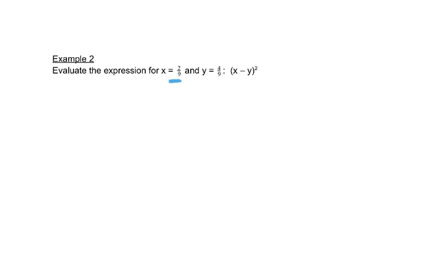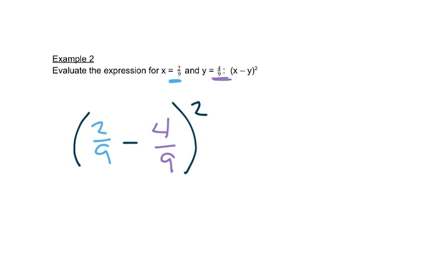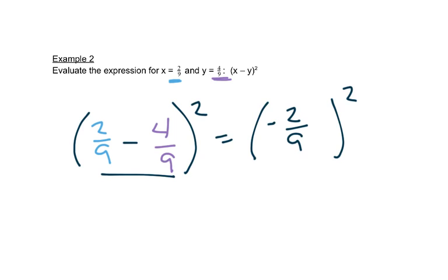This problem wants us to put two ninths in for x and four ninths in for y. So we'll start with our parentheses, then we have x which is two ninths, then the minus, then y which is four ninths, then the parentheses and the square. We start inside because of order of operations. So two ninths minus four ninths — the ninths are the same so we do two minus four, which is negative two ninths.